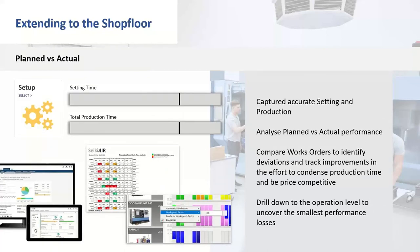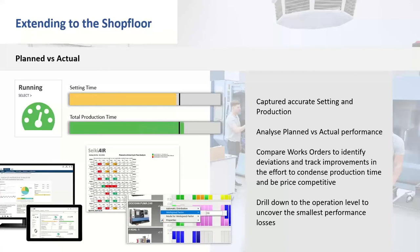We can also capture detailed activity within the lifecycle of an operation — not just when it started and finished, but how long it took to set the job versus how long the production run took. The black line indicates the planned time. In this example, we've slightly underrun on setting time, which is good, but the production run time for the batch has overrun. These KPIs are available within Seeky Air. The production time is coming from the machine monitoring module — we're directly connected to the machinery, so we know exactly how long the machine has actually been running and how long it took to produce the parts.